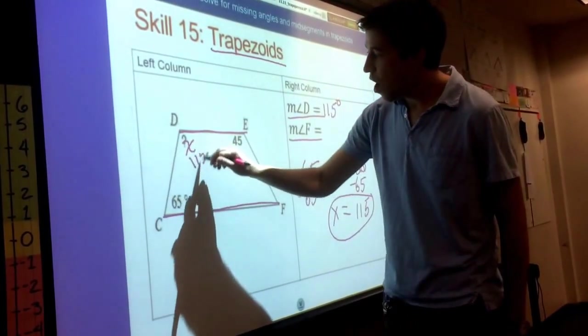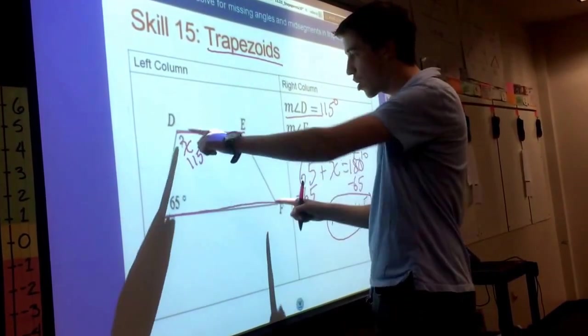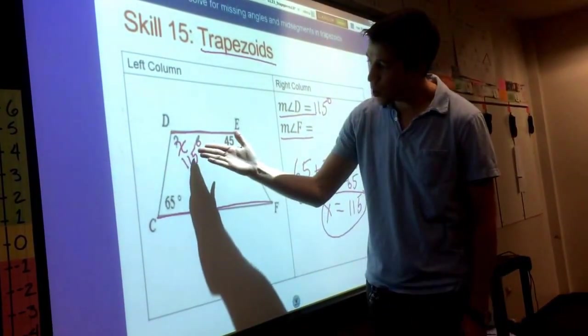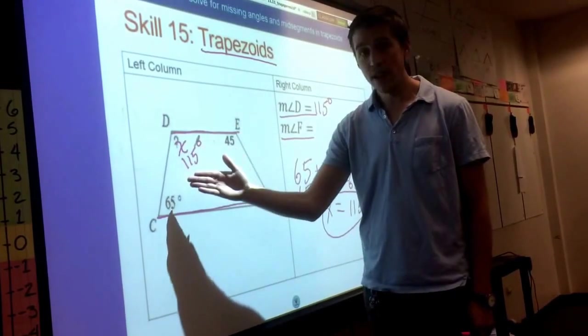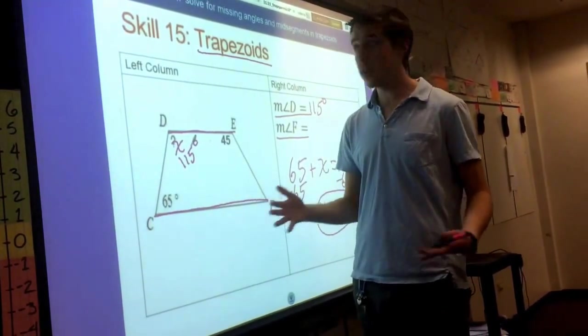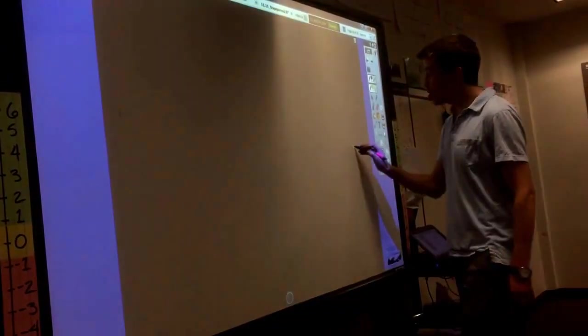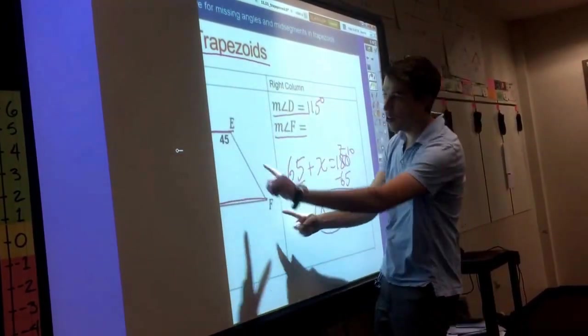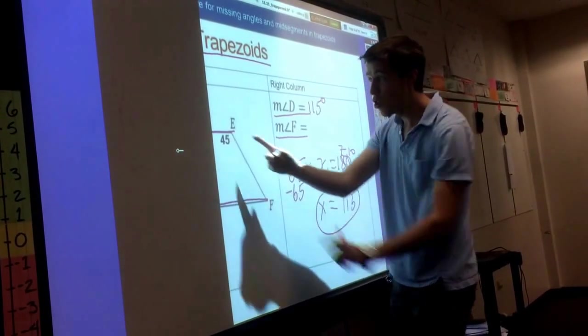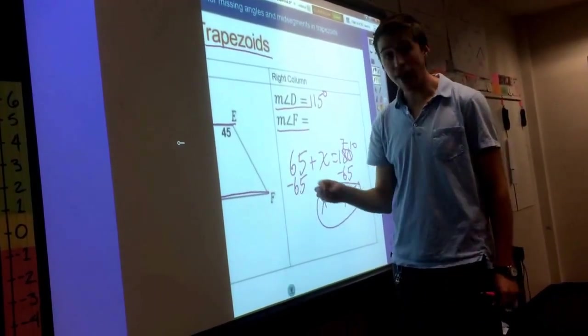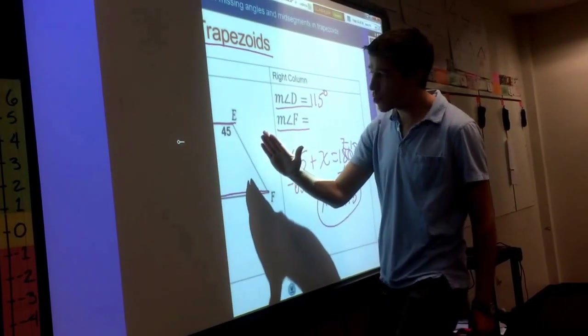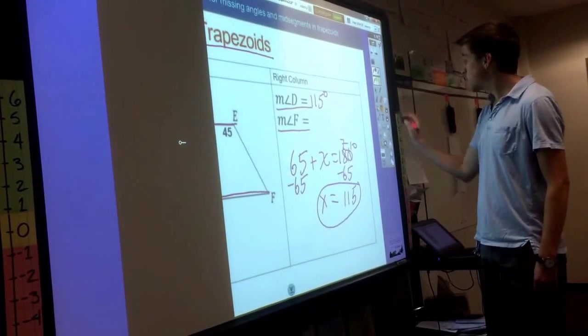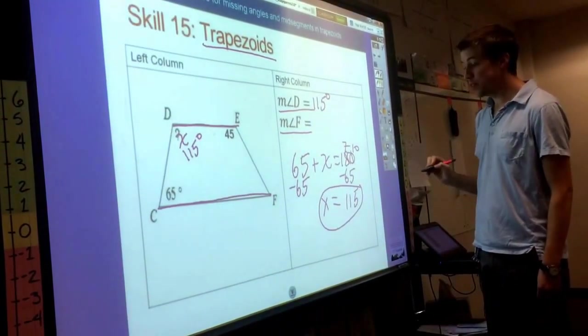But like I said, opposite angles in a trapezoid aren't congruent, so we still need to find angle F down here, and we're not going to be able to use our 115 or the 65, because the only thing we know about angles in a trapezoid are the two angles that are on the same side and on different parallel lines, on different bases. Those are the angles that are supplementary. So you have to make sure they're on the same side of the trapezoid and on different bases, on different parallel lines, and those are the two angles that will be supplementary.